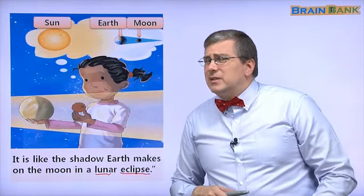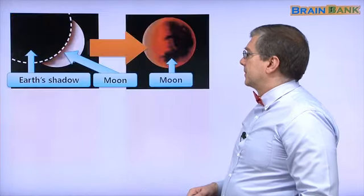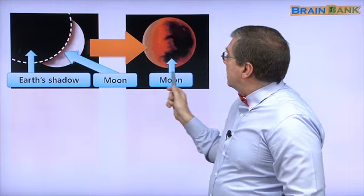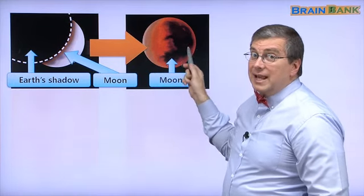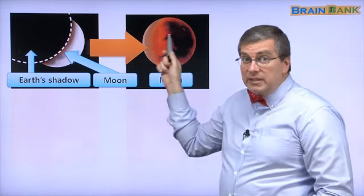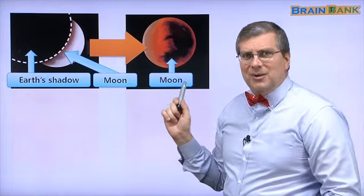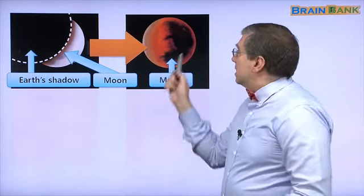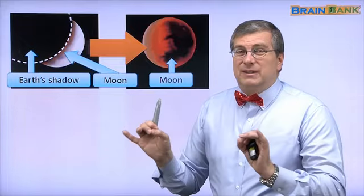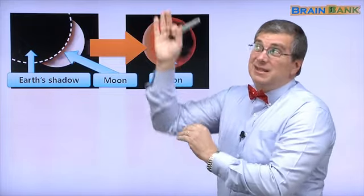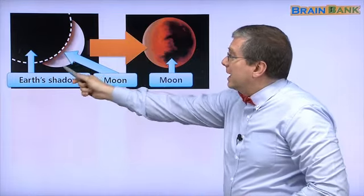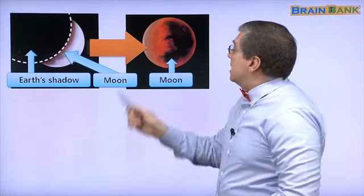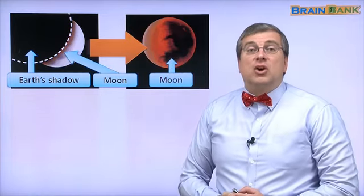So, what does it look like? Earth's shadow is here. Here's the moon. And then the moon looks like this. Wow, bright white. It's so weird, right? Normally, usually, the moon is white. Very bright white in the sky. But during a lunar eclipse, the moon becomes red.